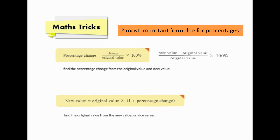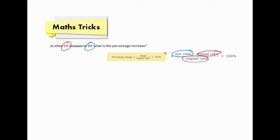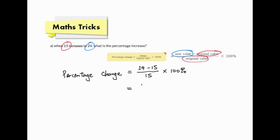Let's try out three examples. The first one: when 15 increases to 24, what is the percentage increase? Percentage increase is actually a kind of percentage change, so we are going to use the first formula. We have to distinguish the original value and the new value first. 15 is the original value, 24 is the new value. So the percentage change equals (24 minus 15) over 15, times 100%, which gives 9 over 15 times 100%.